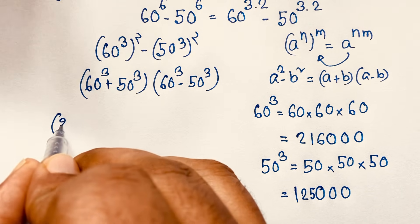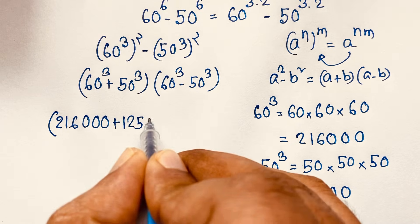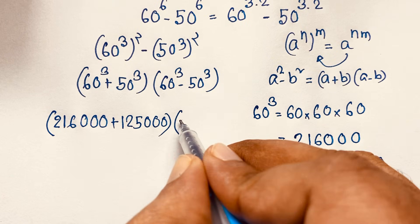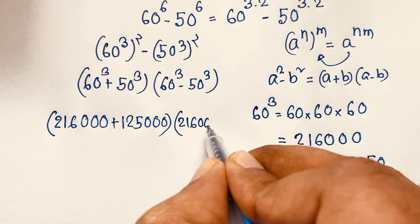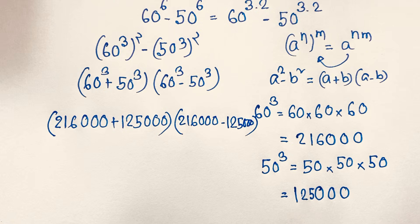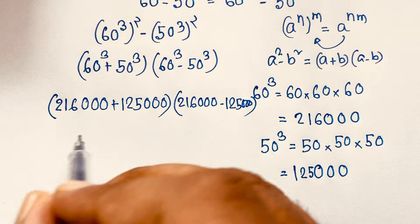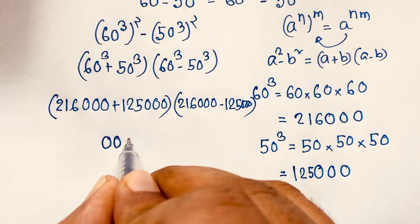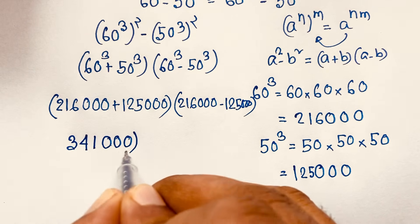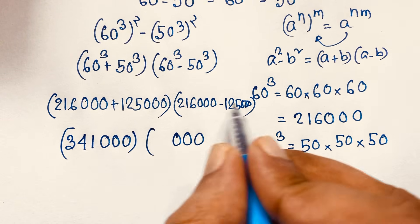So 60³ plus 50³ equals 216,000 plus 125,000, which gives us 341,000. And 60³ minus 50³ equals 216,000 minus 125,000, which gives us 91,000.